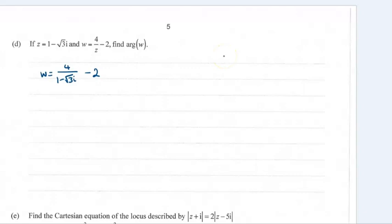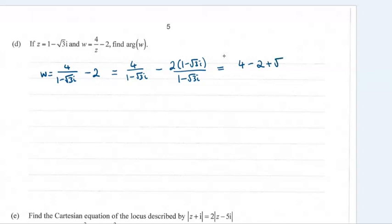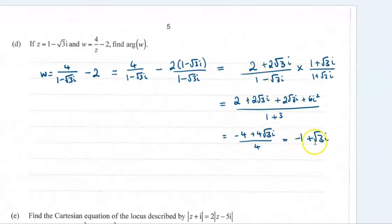Okay, for part d we're going to find the argument, which is pretty straightforward once we have W in a form we can work with. We need to put this into a common denominator — 2 over 1 minus root 3i. Working that through, 4 minus 2 becomes 2, and then we'll rationalize the denominator. This comes to minus 1 plus root 3i.